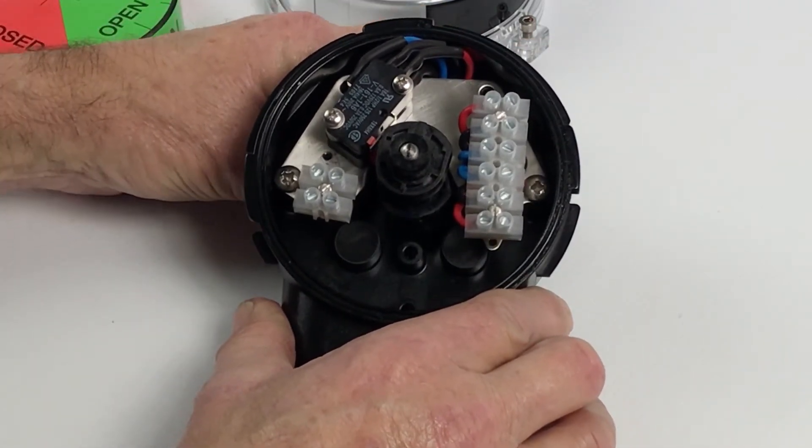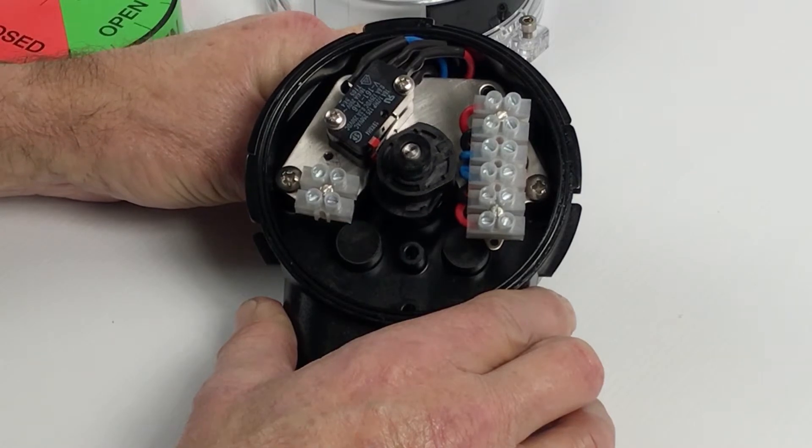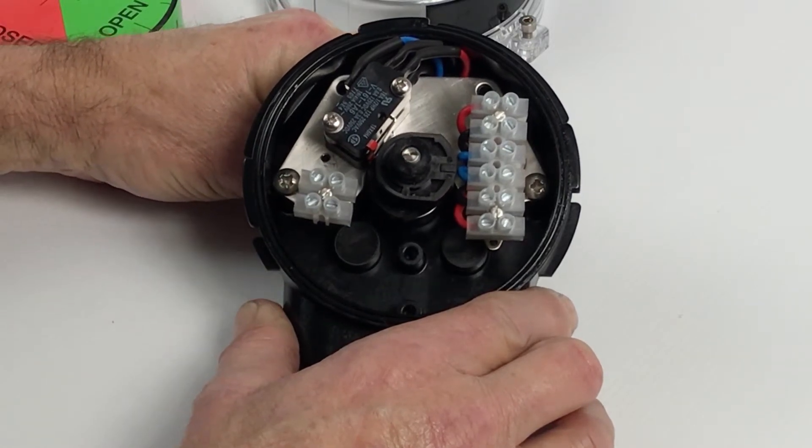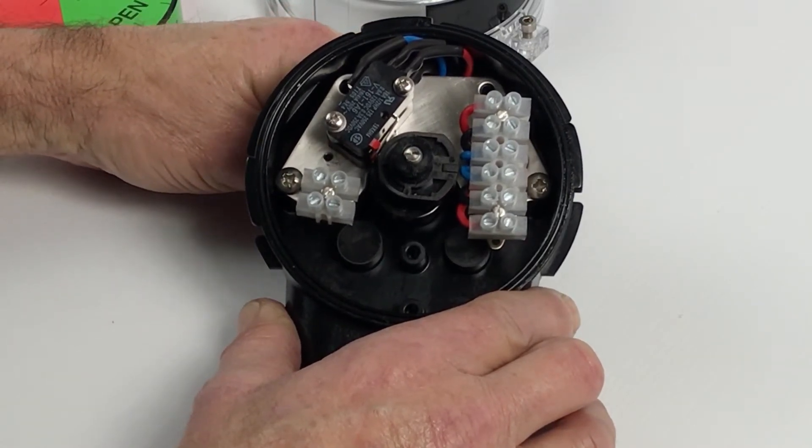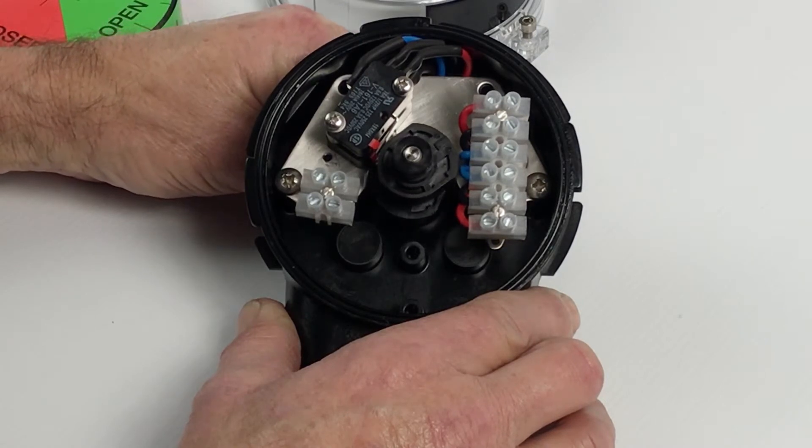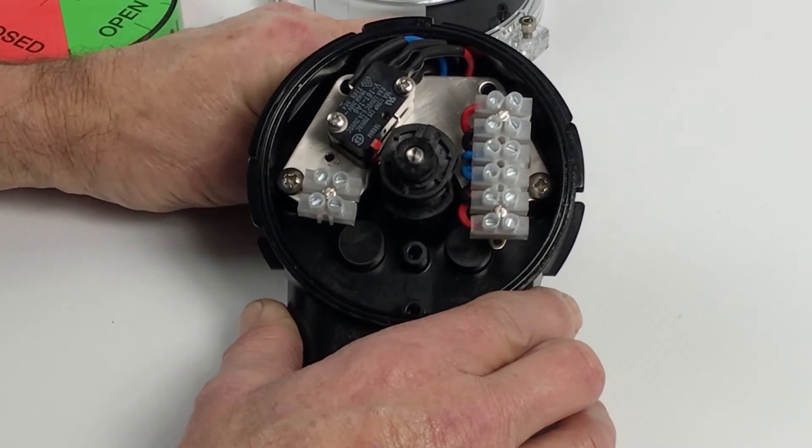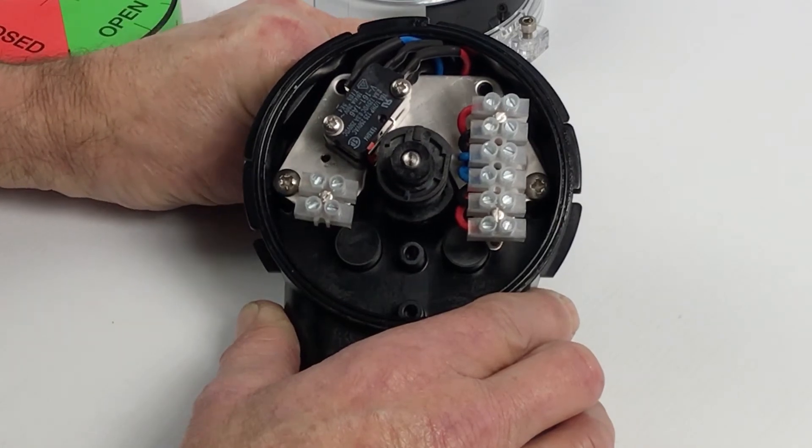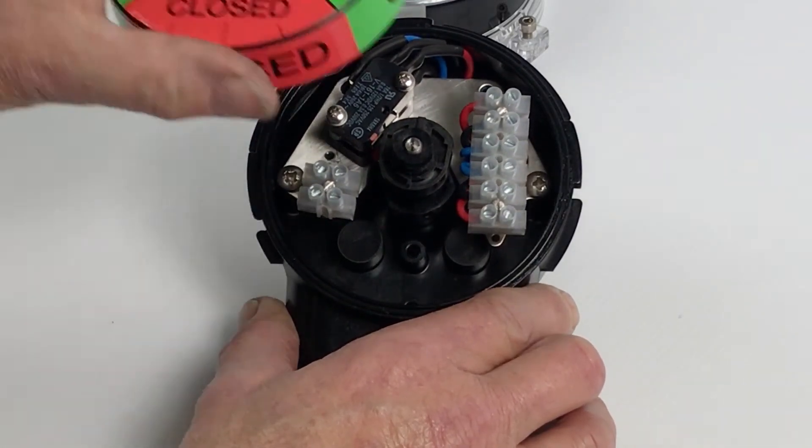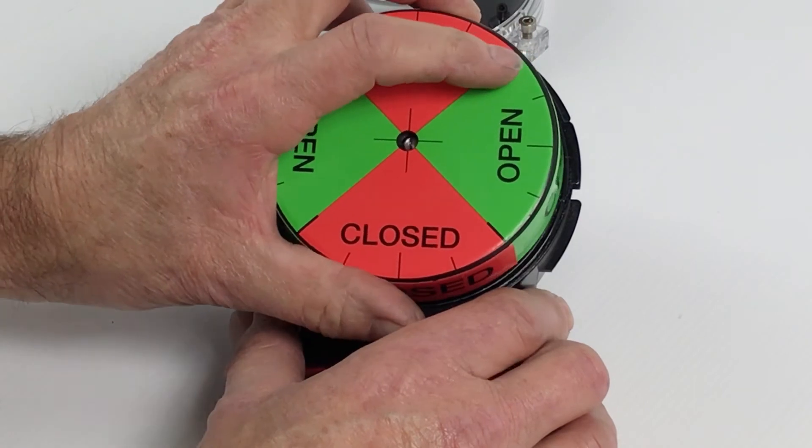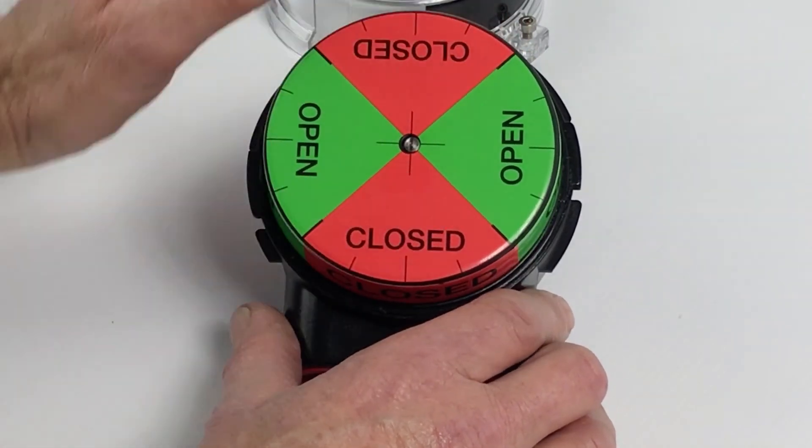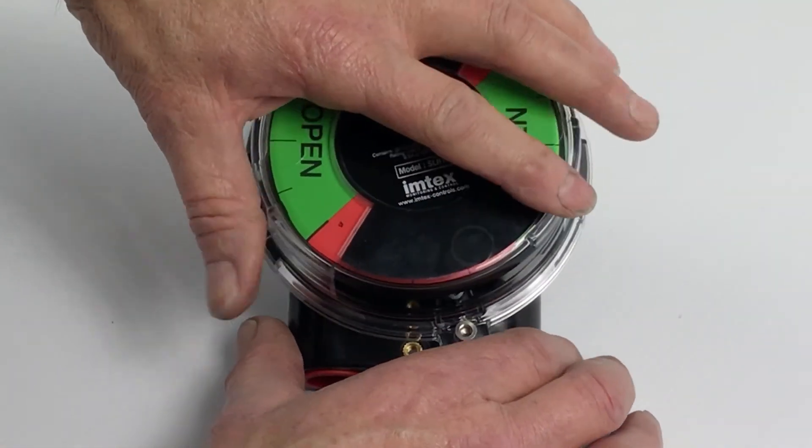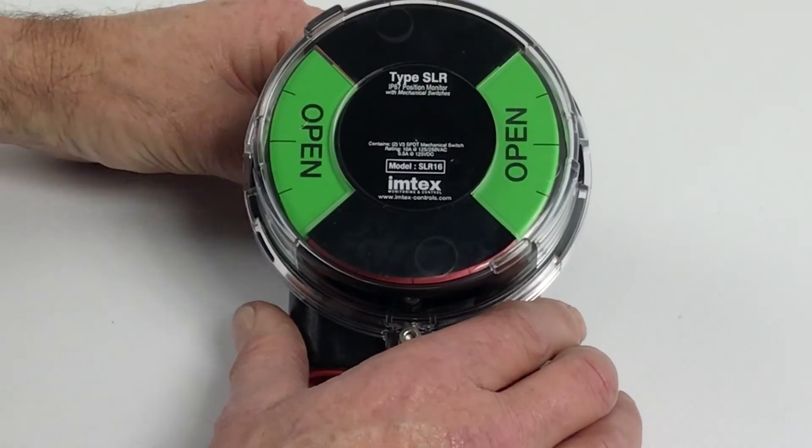Then you can see when you close it, the switch comes off and the next switch comes on. Then reverse it, we're off, and then back to the open position. Put the cover back in place, and there you have it.